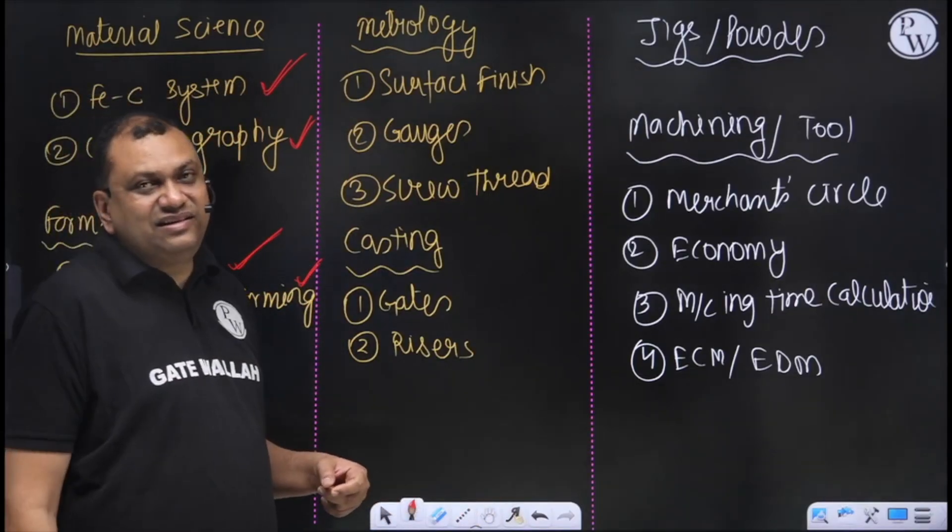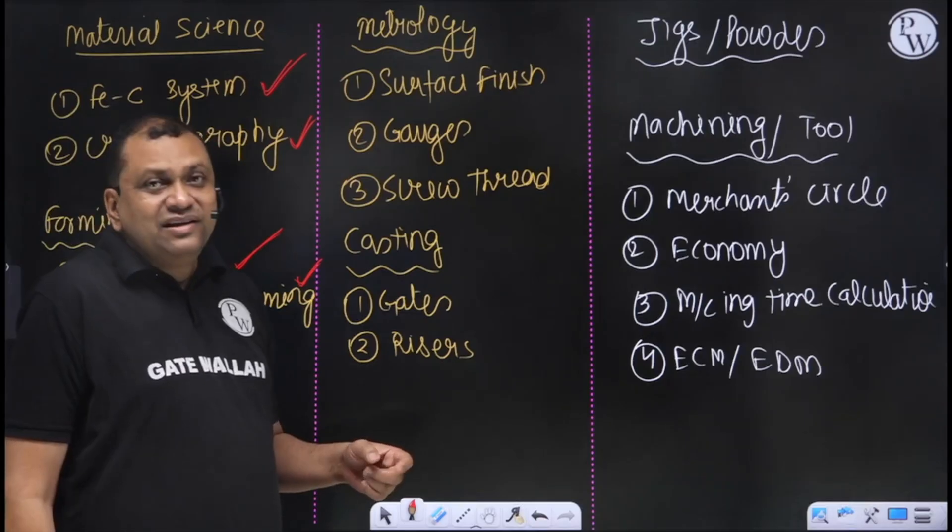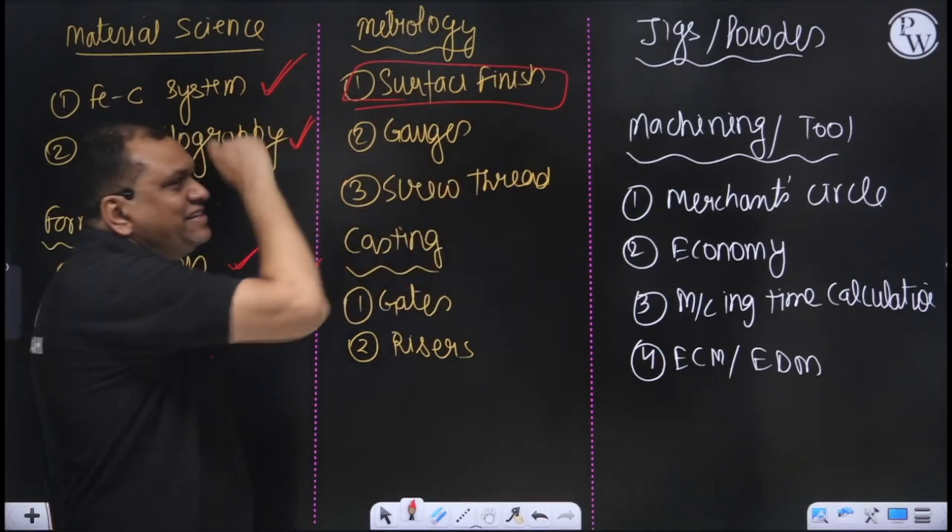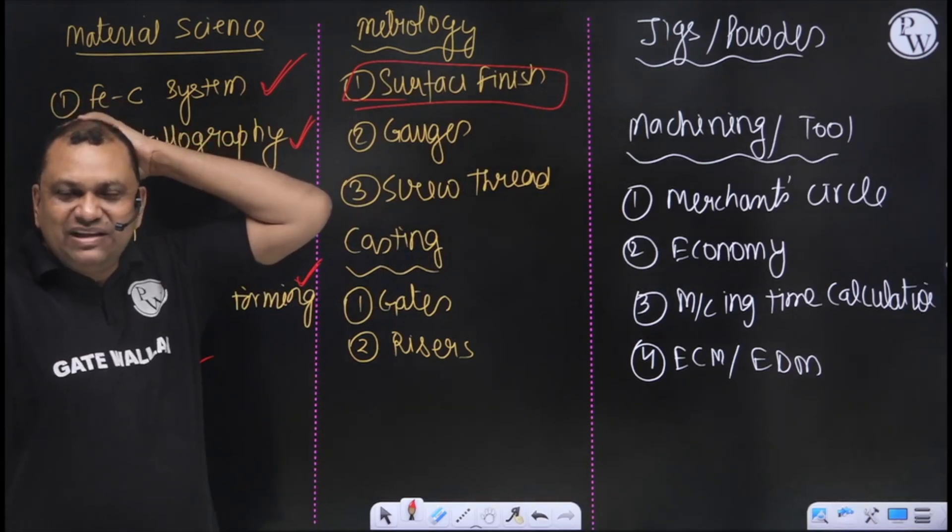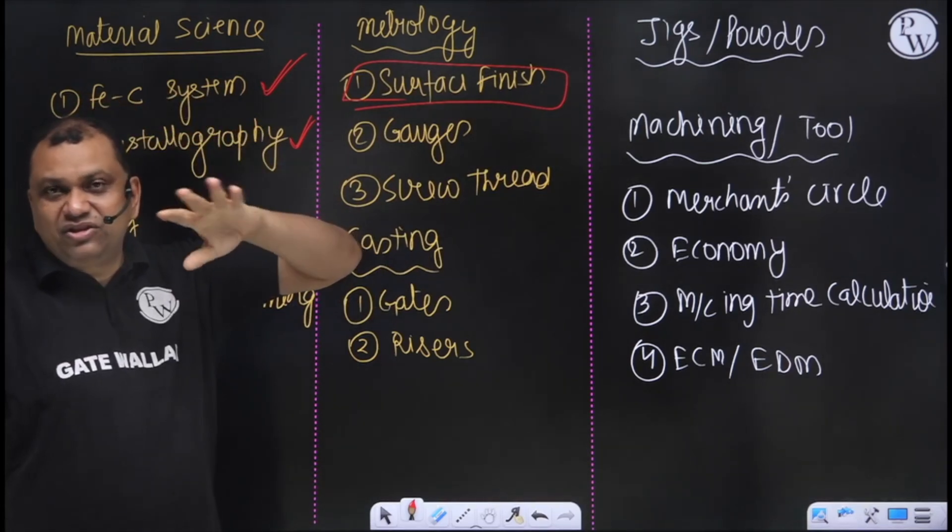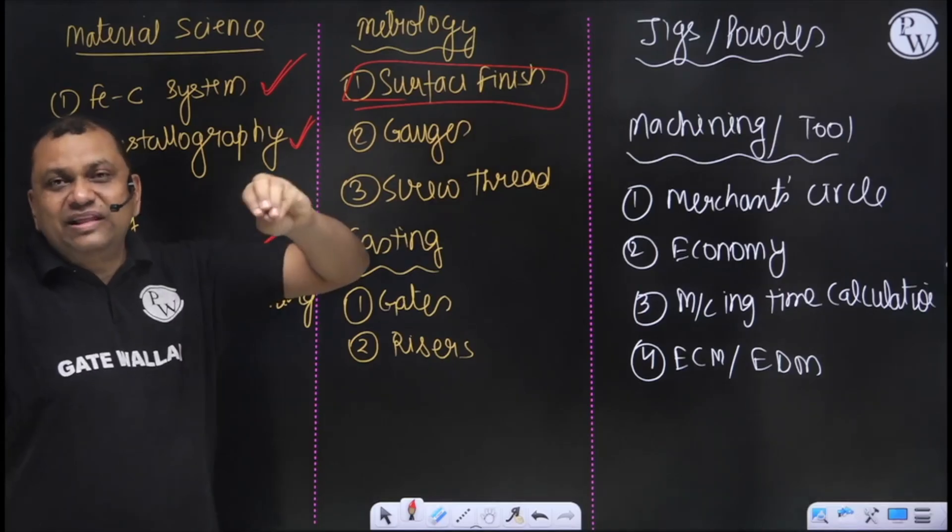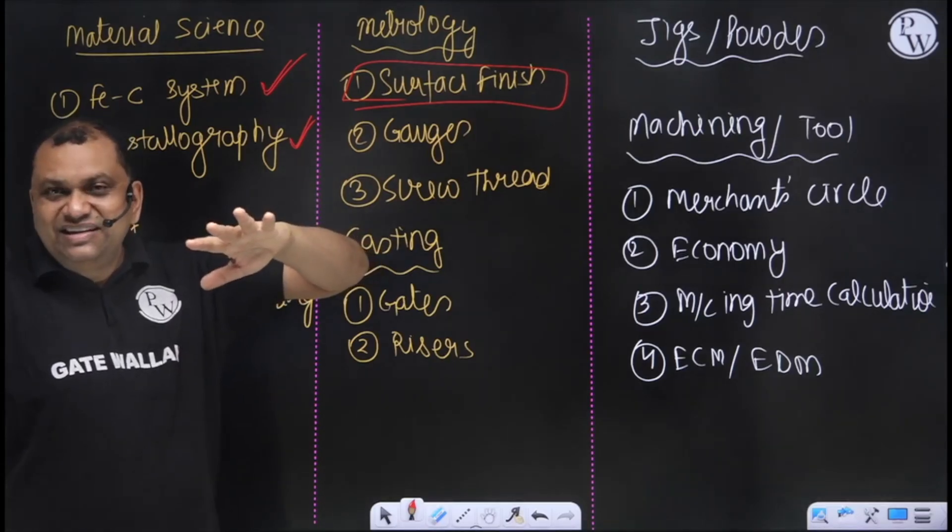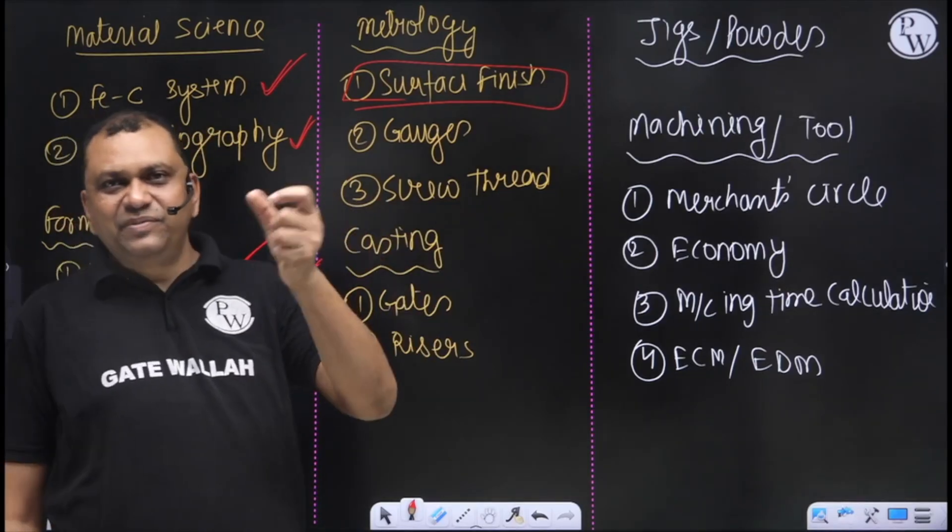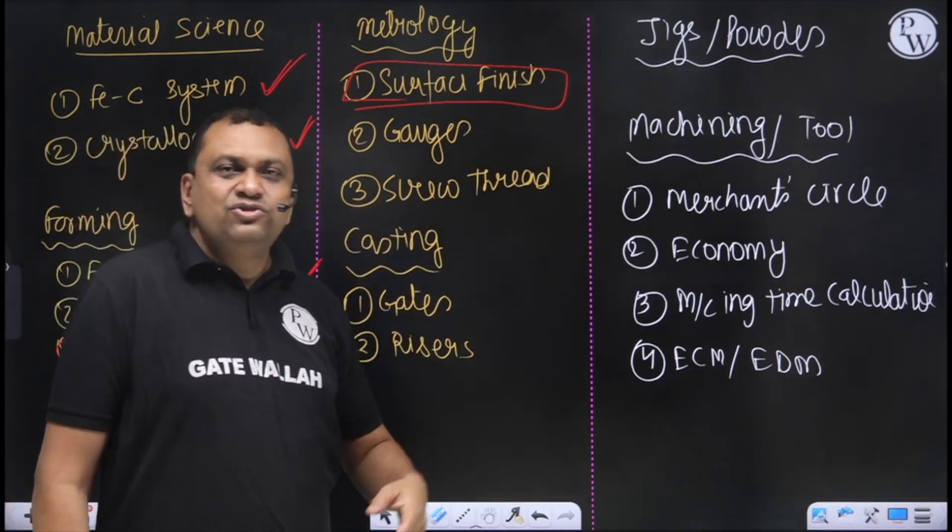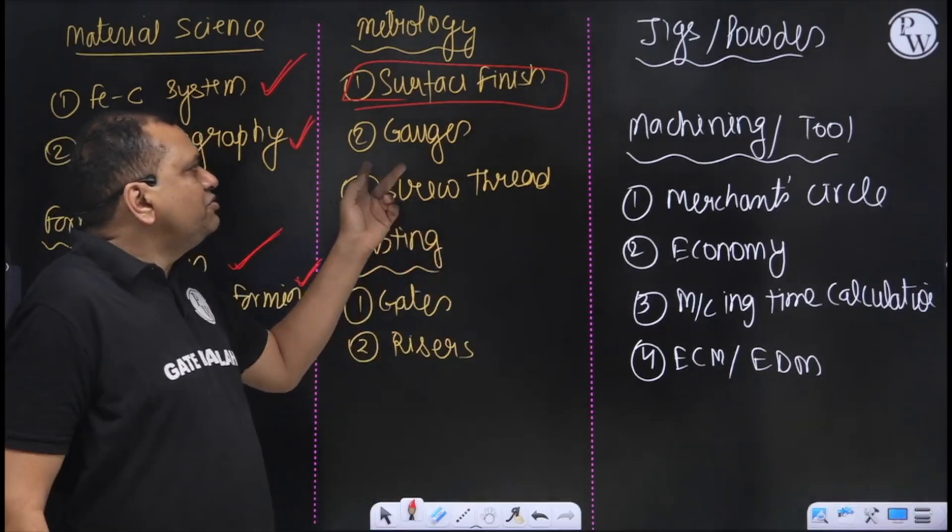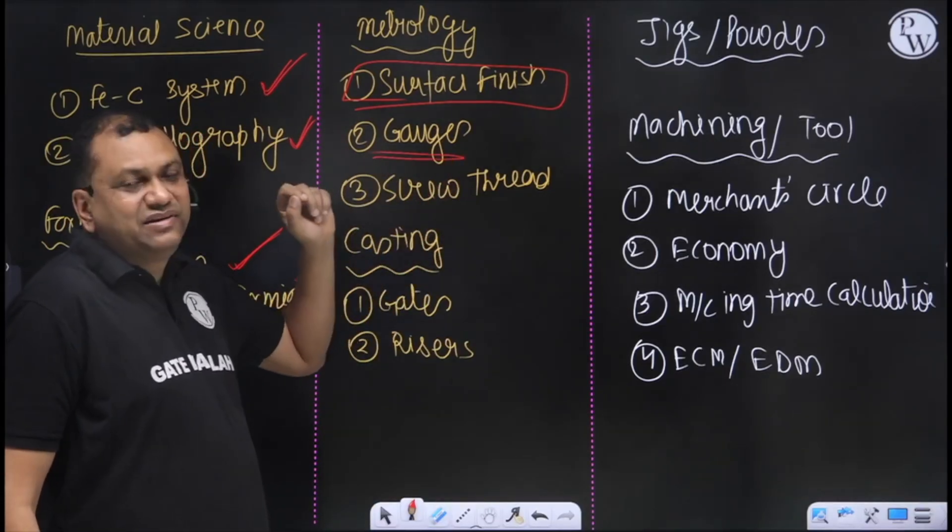As far as metrology is concerned, 99 percent one question will come from surface finish - two marks question. So all the varieties in my class notes, you can be thorough in that. All the varieties of numericals I have already covered. These notes are available on my Telegram channel - just type 'PW' and it will come. From there you can see the notes and what problems I have covered. You should also focus on gauges, limit gauges.